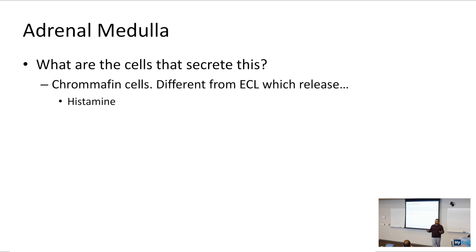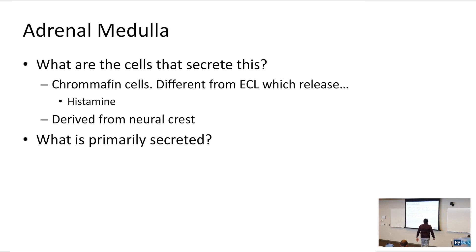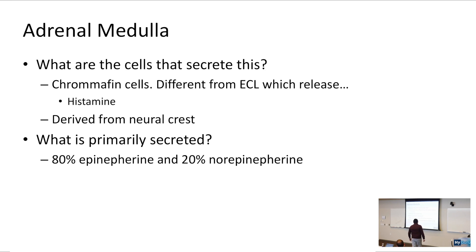Chromaffin-like cells are derived from neural crest — anytime you see neural crest derivatives, integrate what other neural crest derivatives exist in the body. What is primarily secreted from the adrenal medulla? The majority is going to be epinephrine. Epinephrine has more beta-agonism than alpha-agonism, compared to norepinephrine which has more alpha-agonism relative to beta-agonism — a good adrenergic pharmacology tie-in.